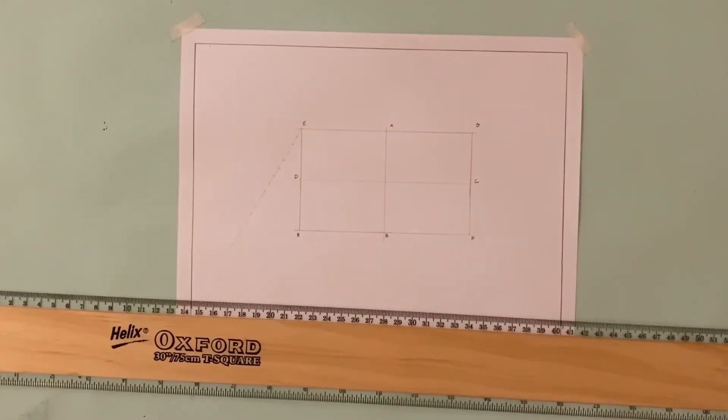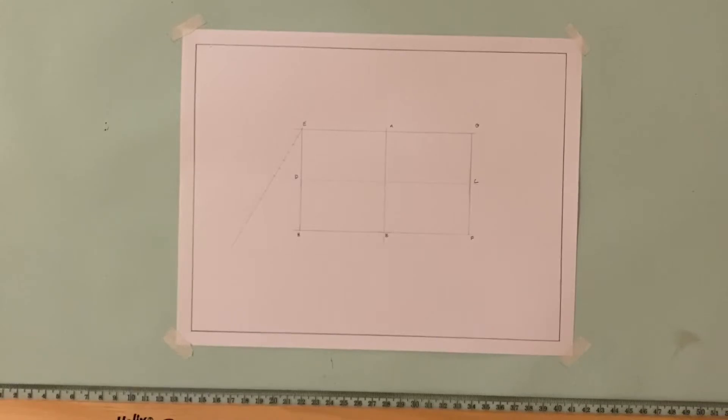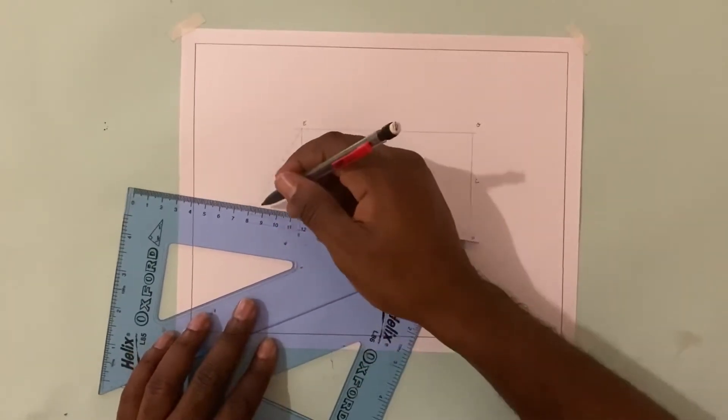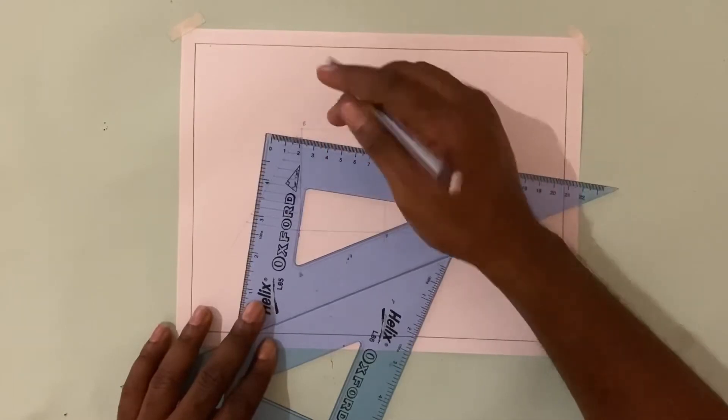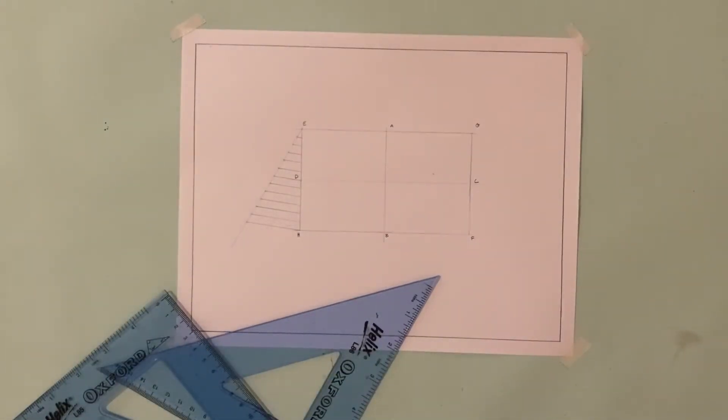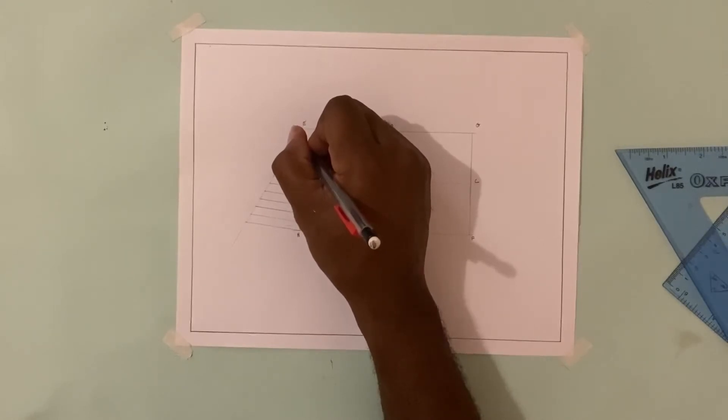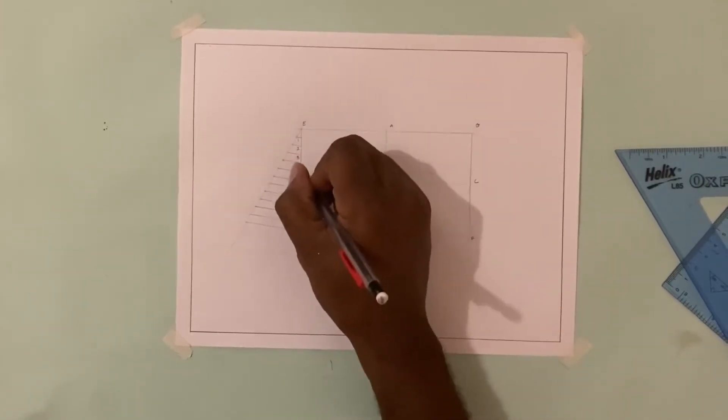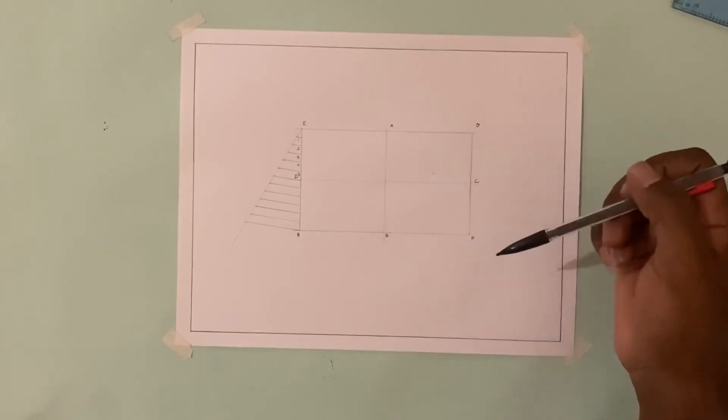Next I'm going to take my set squares and join the final point, point 12, to point H. So we have all our points there, marked off, and we divided our line EH into 12 equal parts. We want to divide the line HF into 12 equal parts as well.